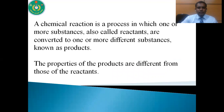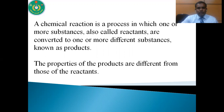So now, what is chemical reaction? A chemical reaction is a process in which one or more substances react with each other and form new compounds. The substances that react with each other are called reactants, and the substances that are produced by the reaction of reactants are called products. The properties of products are totally different from the reactants.